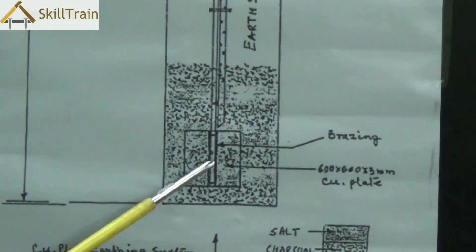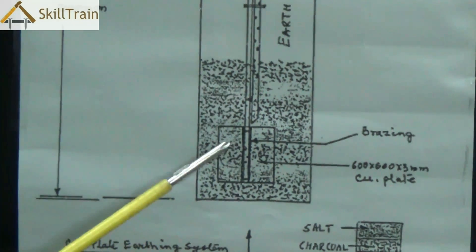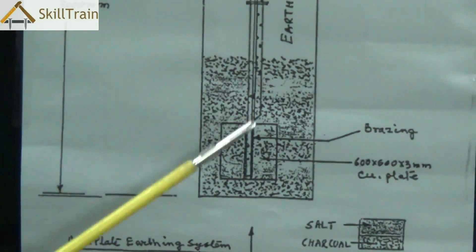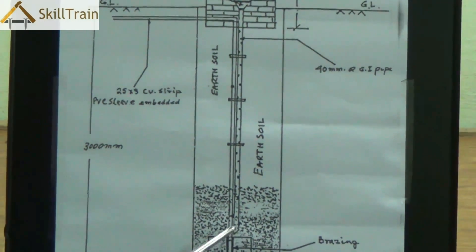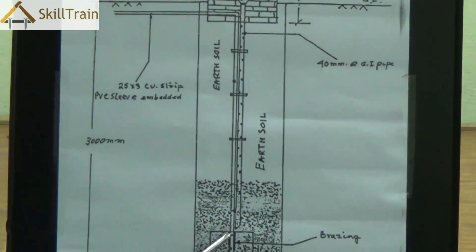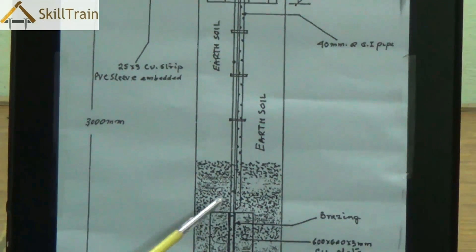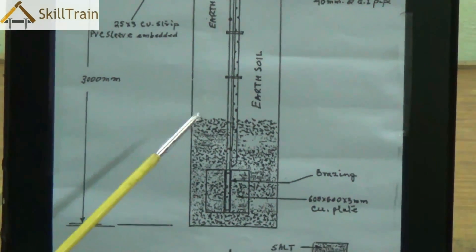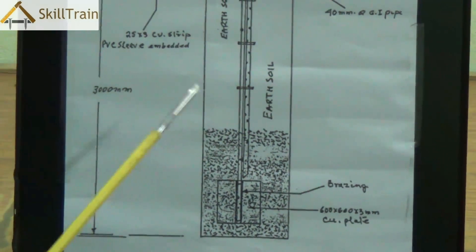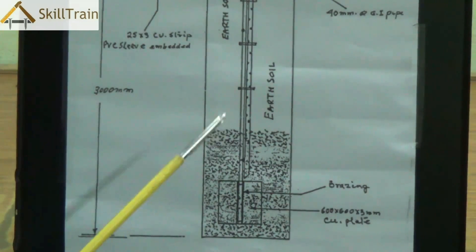A GI basically stands for galvanized iron plate. So we use a copper plate or a GI plate here underneath and this copper plate is then connected to a copper wire to the mains and then to individual plug points in each of the rooms. Now if you use a GI plate it's better to use a GI wire to connect it to the plug points or to the mains.